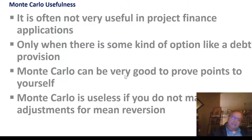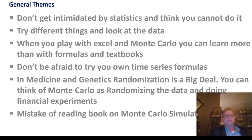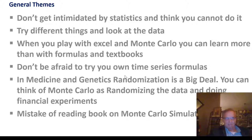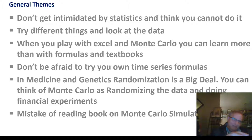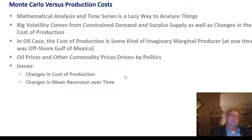How do you correctly make these adjustments for mean reversion? I've made a few other videos about this. Try to do things yourself - don't get intimidated. Don't say 'I'm not applying this because a textbook says I'm supposed to do it this way.' Do it yourself, play around with it, don't be afraid to try your own things to see if they make sense. The idea about Monte Carlo simulation is you're creating a random sample.